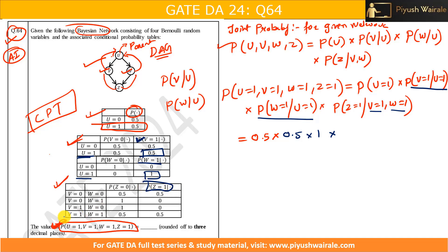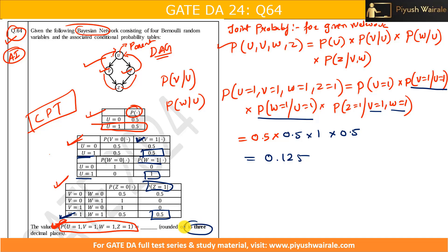P(W=1 | U=1) is 0.5, and P(Z=1 | V=1, W=1) is also 0.5. So the calculation is 0.5 × 0.5 × 0.5 × 0.5. If you do the calculation, the answer will be 0.125 — rounded to three decimal places, 0.125 is the answer.